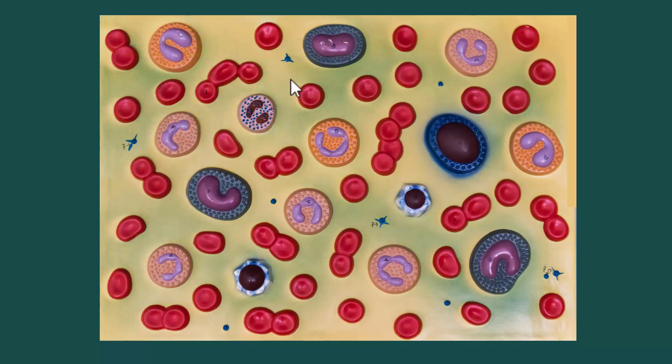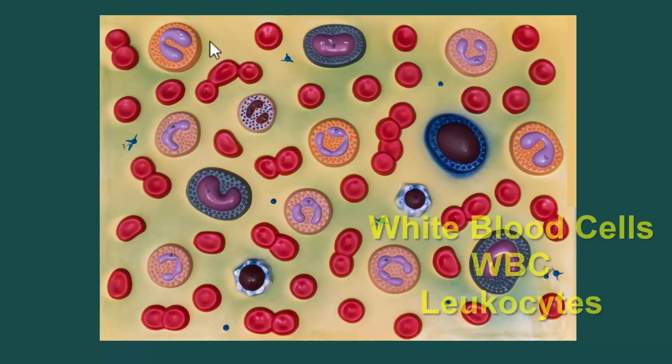The rest of these cells — except for the little dots we'll get to later — are called white blood cells, or leukocytes. White blood cells are often abbreviated as WBCs, but they are leukocytes.